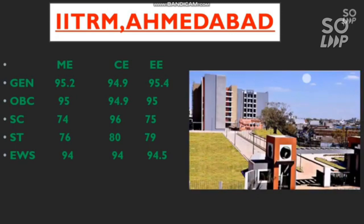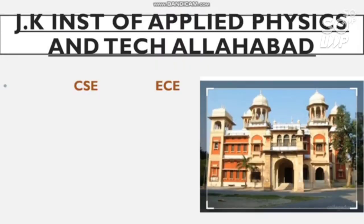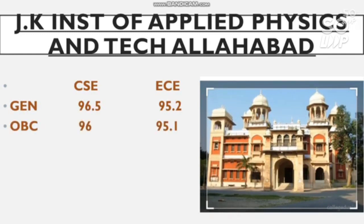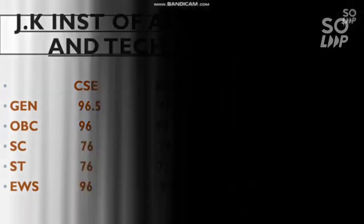The next GFTI is JK Institute of Applied Physics and Technology, Allahabad. The cutoff for CS and EC branches: General requires 96.5 and 95.2 percentile for CS and EC. OBC requires 96 and 95.1. SC requires 76 and 74 percentile. ST requires 76 and 72 percentile. EWS requires 96 and 95 percentile for CS and EC.